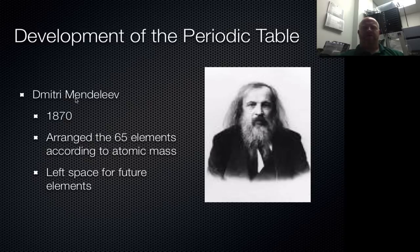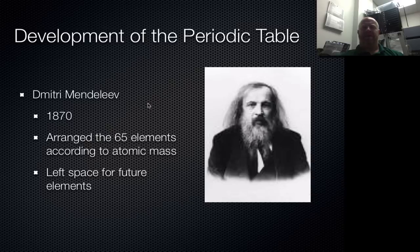The first thing we want to talk about is Dmitry Mendeleev. Mendeleev was a Russian physicist, and his contribution to our scientific community was basically developing the first periodic table. He was working in the 1870s, around the same time as the early discoveries about the electron and the proton. What he did is he took the 65 known elements and arranged them according to their atomic mass.